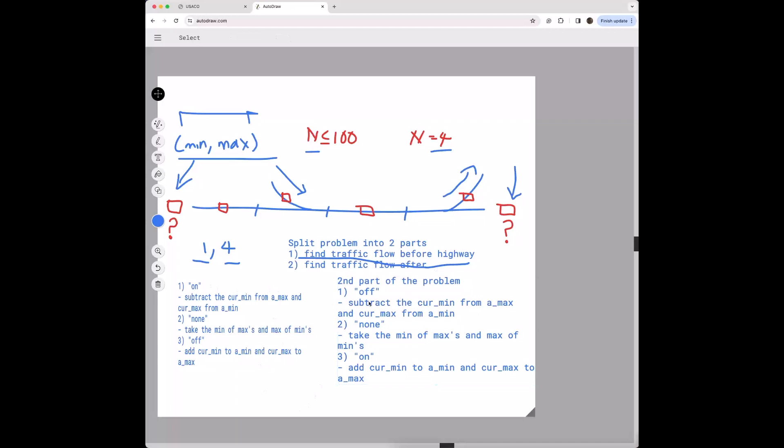So now we have all the conditions set for the two parts of the problem. So if we follow this first condition, I mean part and set of conditions, then we're going to get the answer to the amount of traffic flow before the highway. And if we follow the second part, then we'll get the amount of traffic flow after. Yeah, so that's the logic of this problem.